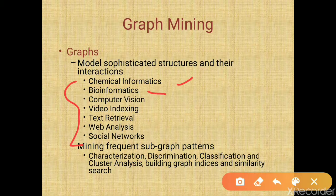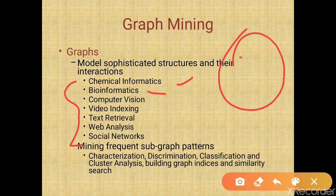For example, in chemical informatics: given a complex chemical compound, if you want to search whether a particular small compound is part of the complex compound, you find the structure of that complex compound and search whether the sub-compound or substructure is present in it or not. Similarly in bioinformatics, whether a protein is present or not — if a test is positive, that indicates a particular compound is present. To determine whether a particular sub-compound is present or not, we use graph mining techniques.